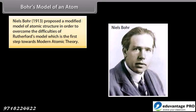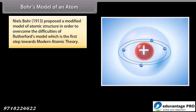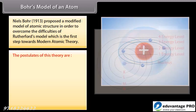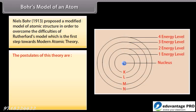Bohr's Model of an Atom. Niels Bohr, 1913, proposed a modified model of atomic structure in order to overcome the difficulties of Rutherford's model, which is the first step towards modern atomic theory. The postulates of this theory are: